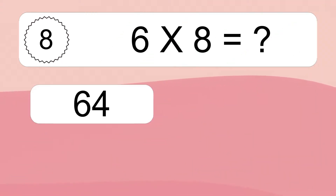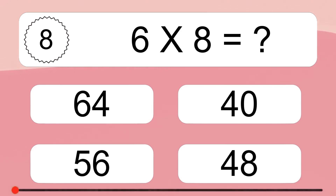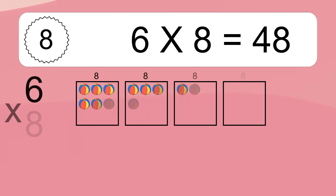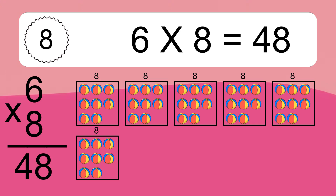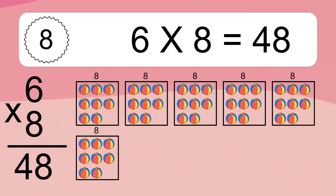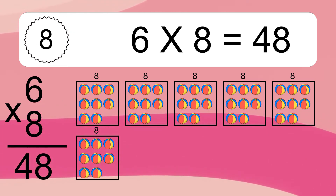Six times eight equals what? Six times eight equals forty-eight. We have six boxes and each box has eight colorful balls inside. If you count all the balls in all the boxes together, you will have six times eight balls. This equals forty-eight balls.